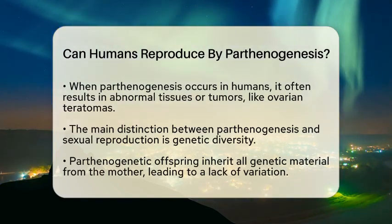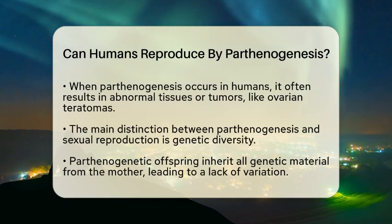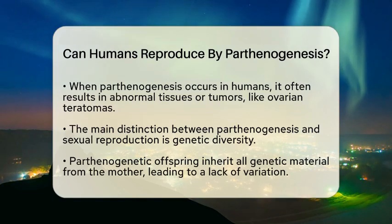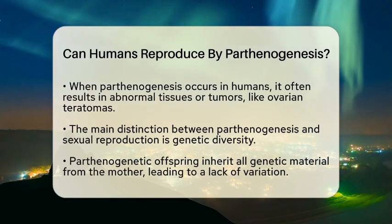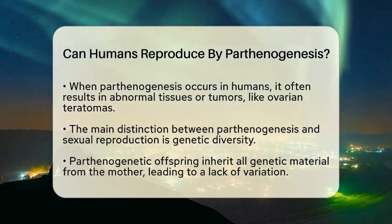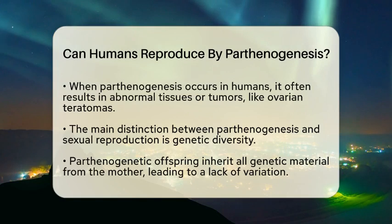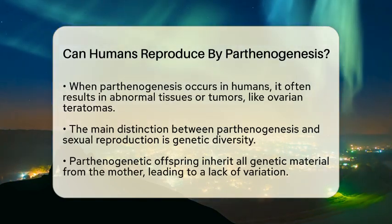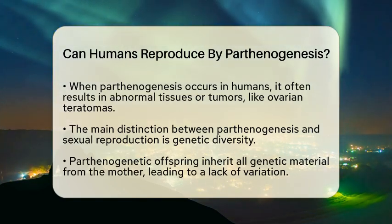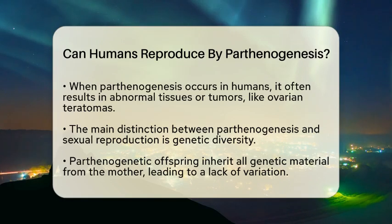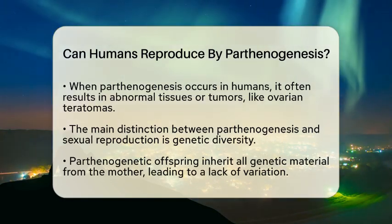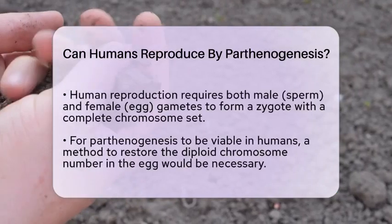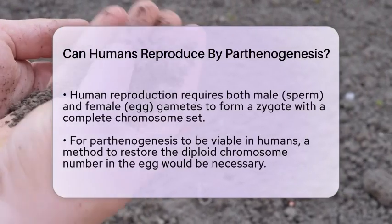The main difference between parthenogenesis and sexual reproduction is genetic diversity. In parthenogenetic offspring, all genetic material comes from the mother. This lack of genetic variation can be a significant limitation. Human reproduction usually requires both male and female gametes, which are sperm and egg cells. These gametes combine to form a zygote that has a complete set of chromosomes.